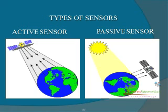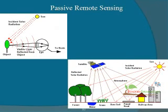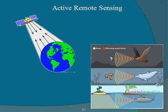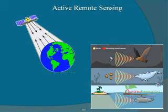There are two different types of sensors: active sensors and passive sensors. Remote sensing systems which measure energy that is naturally available are called passive sensors. Passive sensors can only be used to detect energy when naturally occurring energy is available — for reflected energy, this can only take place when the Sun is illuminating the Earth. Active sensors, on the other hand, provide their own energy source for illumination. The sensor emits radiation directed toward the target to be investigated, and the radiation reflected from that target is detected and measured by the sensor.